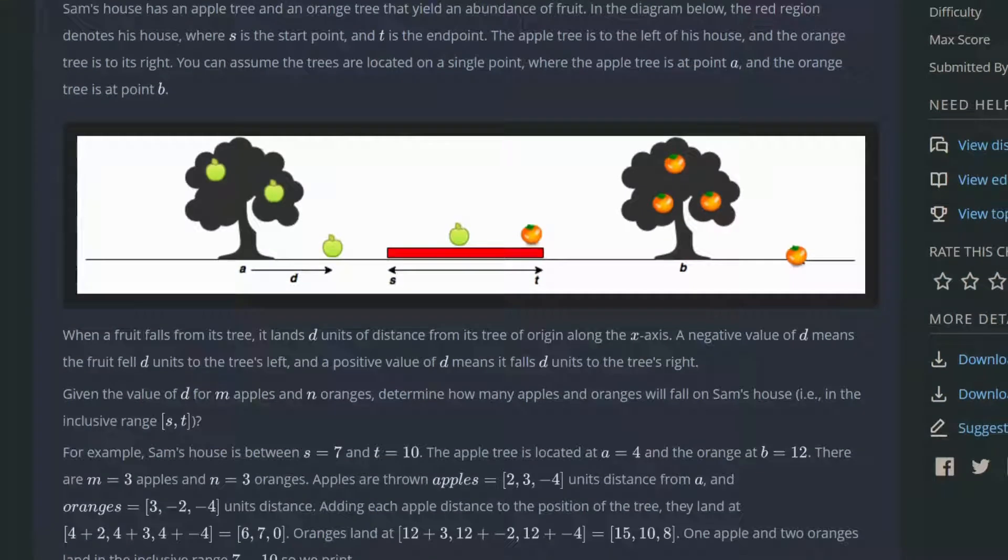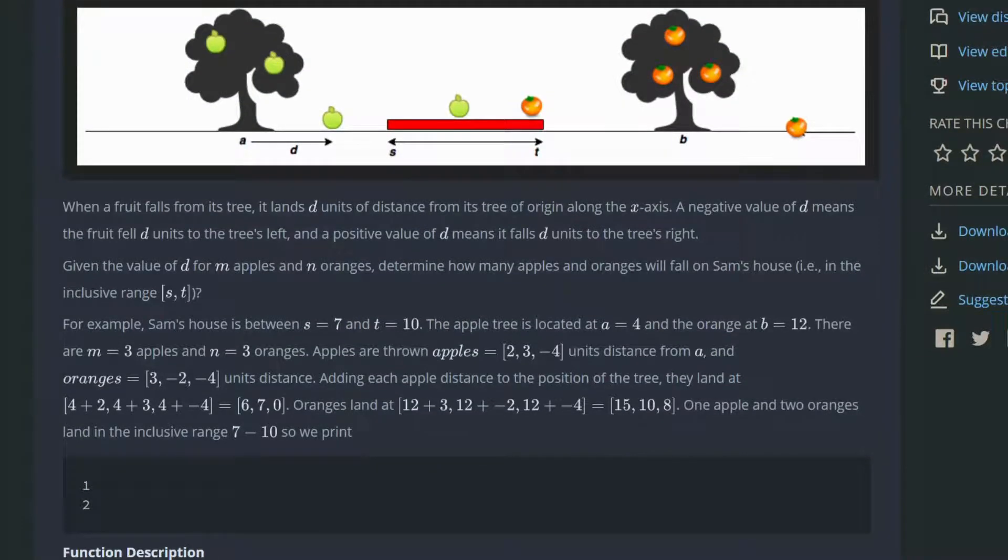Here they give you a good example. We have Sam's house between S equal to 7 and 10, and the apple tree is located at position A which is 4. We can ignore B, but A is 4, and these are the apples, the array of integers, the distance that each fruit crossed when it's dropped down.